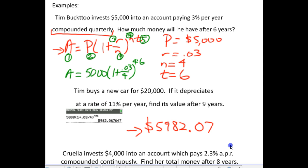That's $5,982.07. So, let it make sense. If he started with $5,000, and now his total amount is $5,982.07, does it make sense that his interest that he earned would be just $982.07? That makes sense.